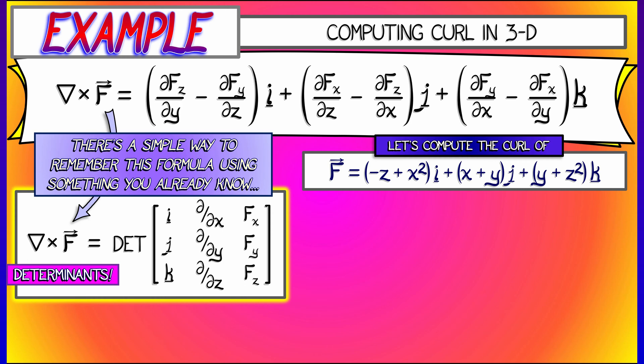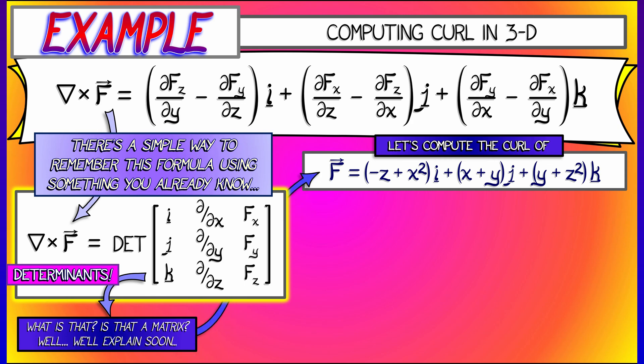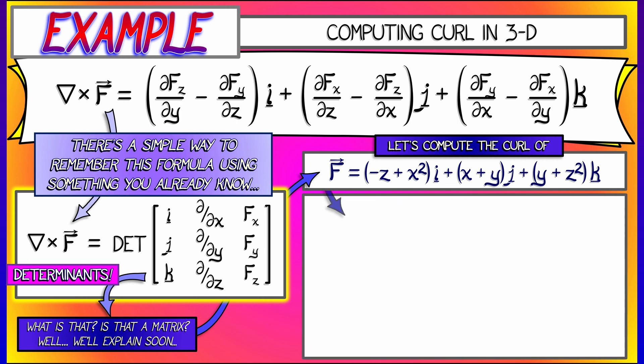What is this? This is a matrix of what? You got vectors, you got differential operators, you got components of the vector field. What a mess. Yeah, it's kind of a mess. We'll explain the notation soon. For now, let's see that this formula is effective in computing the curl and that it matches this formula.